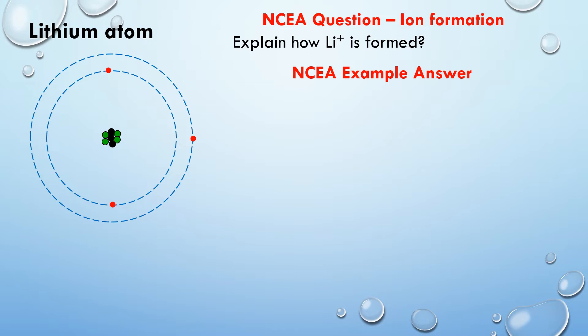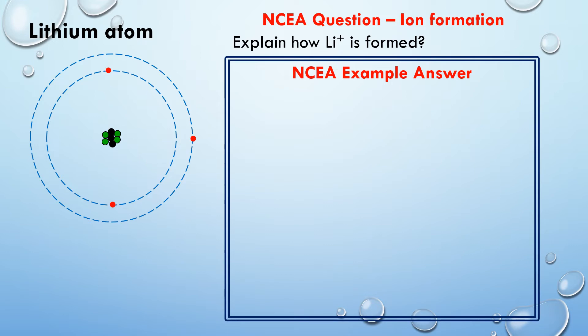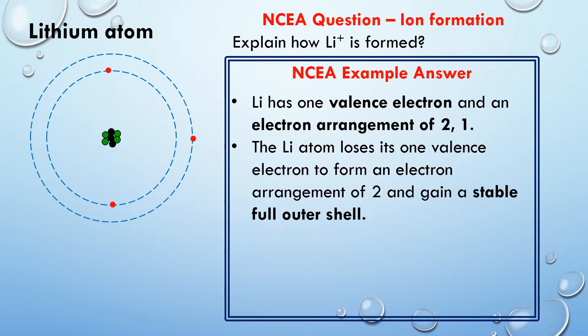So in our answer we're going to say that lithium has the electron arrangement of 2,1. And I've also stated it's got one valence electron. So the next thing I'm going to state here is it needs to lose this valence electron. Now the reason it does it, we have to be very clear about this, is to get a stable full outer shell. So it's the outer shell, it needs to be full, and the reason it does this is because it's stable. So make sure that you explain that it's stable here.